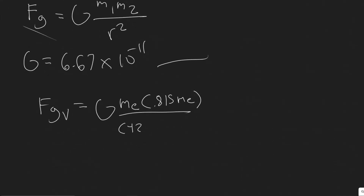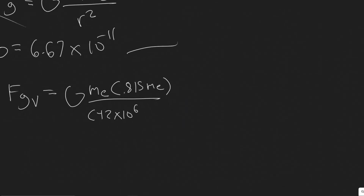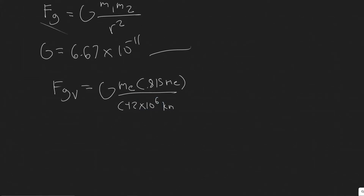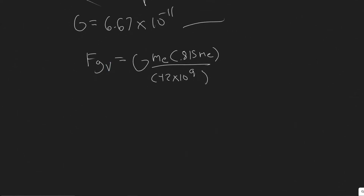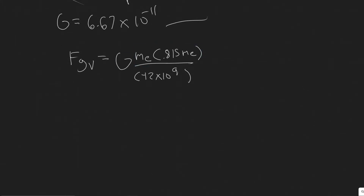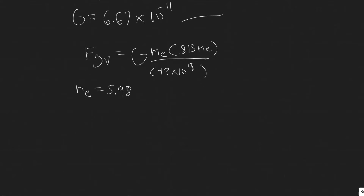Plugging in the distance: 42 million kilometers is 42 × 10⁶ km. Since we need meters, multiply by 10³, giving 42 × 10⁹ meters. For the mass of the Earth, use 5.97 × 10²⁴ kg. You plug in the mass of the Earth twice — once for the Earth and once representing the Venus mass factor — then divide by the distance squared to get FGV.